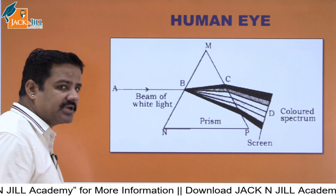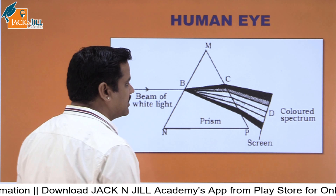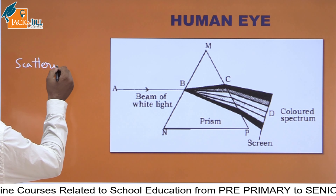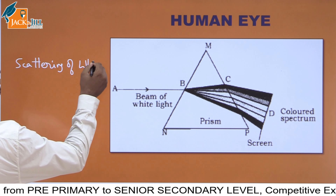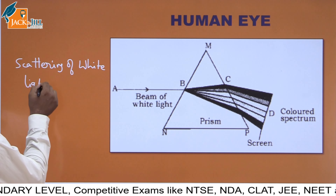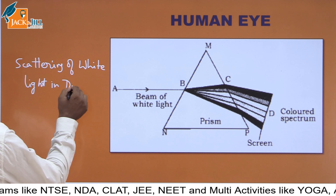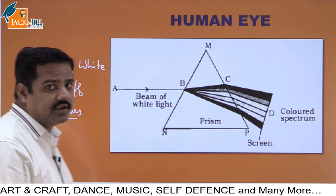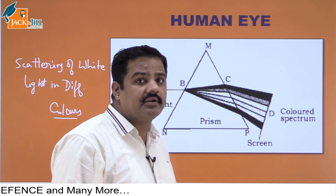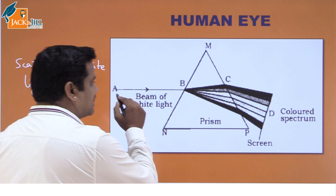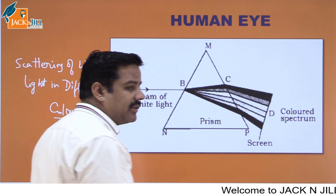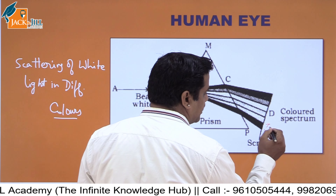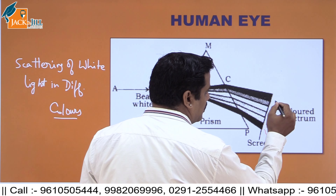After that, we have seen what is dispersion — scattering of white light into different colours. White light scatters into a combination of coloured lights. These colours are: violet, indigo, blue, green, yellow, orange, red.